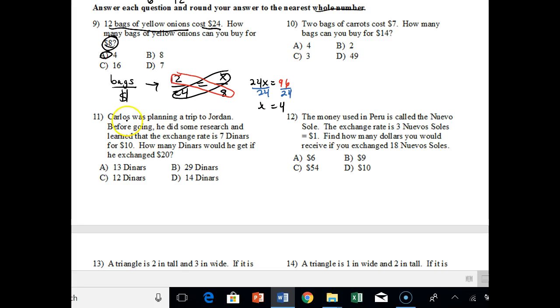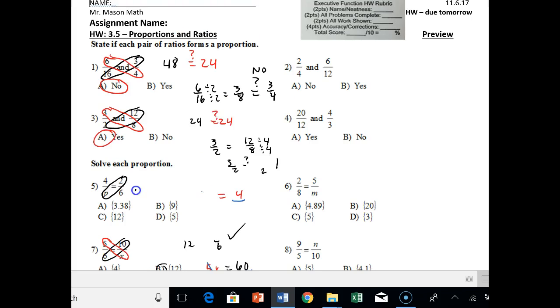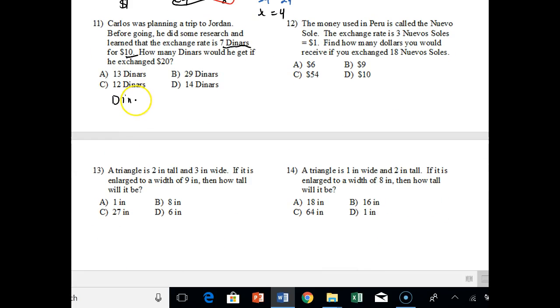All right, so let's look at 11. Carlos was planning a trip to Jordan. Before going, he decided to do some research. And he learned that the exchange rate is 7 deniers for $10. So deniers are what they use in Jordan for money. And obviously dollars are what we use here in the United States. So how many deniers would he get if he exchanged $20? So first of all, what are we comparing? We're comparing deniers and dollars, right? And the first ratio they gave us was 7 deniers, 7 deniers on top over $10, 10 on bottom equals.